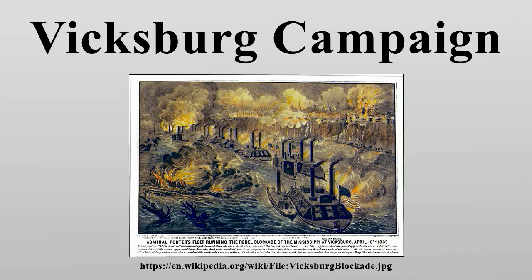The Union Army of the Tennessee under Maj. Gen. Ulysses S. Grant gained control of the river by capturing this stronghold and defeating Lt. Gen. John C. Pemberton's forces stationed there. The campaign consisted of many important naval operations, troop maneuvers, failed initiatives, and 11 distinct battles from December 26, 1862, to July 4, 1863.